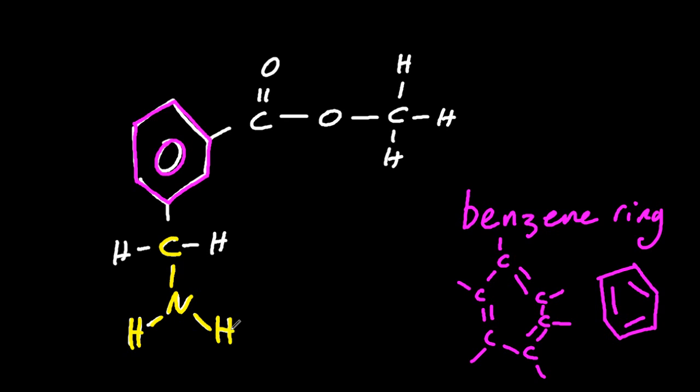If there's a carbon with a nitrogen attached, almost certainly that's an amino group. Now, that nitrogen might have hydrogens on it, or it might have alkyl groups like methyl or ethyl also attached. But really, you're looking for a carbon with a nitrogen attached. That's the amino group.